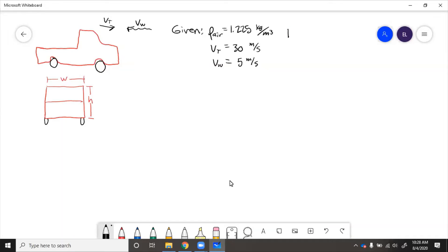Now if the height h equals 1.5 meters, the width equals 2 meters, and the drag coefficient equals 0.9, find the drag force.